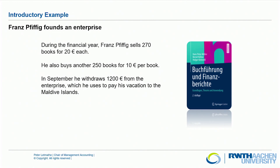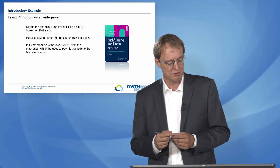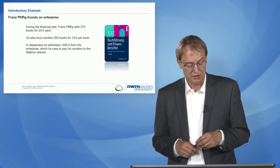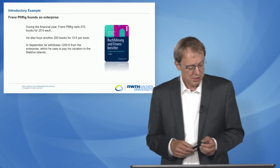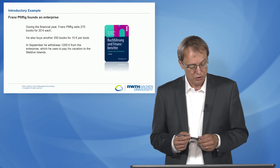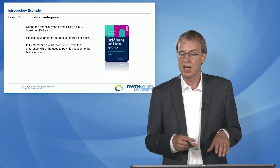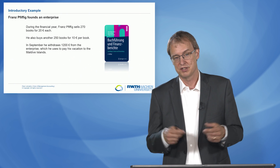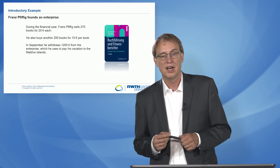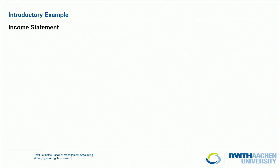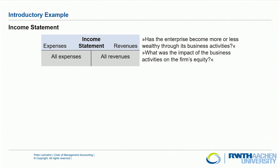During the financial year, Franz Pfiffig sells 270 books at 20 euros each, generating revenues of 5,400 euros. He also buys another 250 books at 10 euros each, spending 2,500 euros. In September he withdraws 1,200 euros from the enterprise for a vacation. With this information we can now generate an income statement to determine how much profit the enterprise makes.